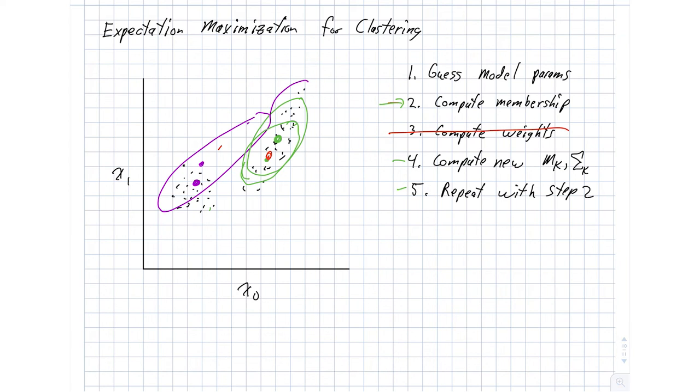Since the points up here are pulling less on this cluster, there's going to be less of a pull to make this a really elongated Gaussian. And so we're going to end up with something more along the lines like this. So there's a little bit of elongation, but not as much. So let me erase the old ellipses. And there we go. And let's also erase the old means.